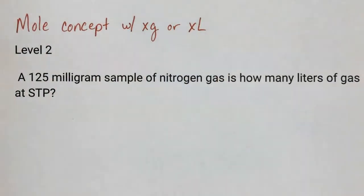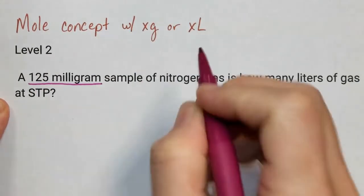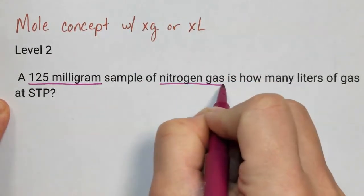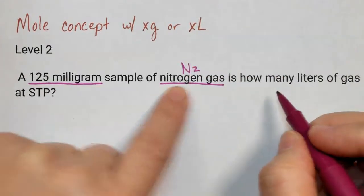We're going to look at the problem and see that we're given 125 milligrams of nitrogen gas. Nitrogen gas is a diatomic, so it's going to be N2 as the formula.